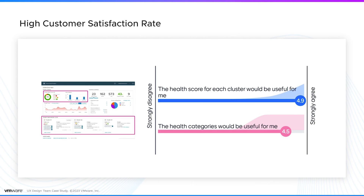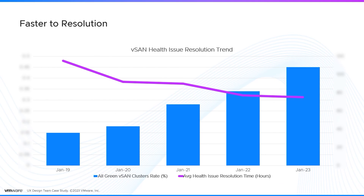Impact. When the dashboard was launched, it was quickly adopted by over 4,000 clusters. Customers gave it a 4.9 out of 5 rating, strongly agreeing that the cluster overview was useful for them. Data has shown that the average health issues resolution time has decreased, and the all-green cluster rate has increased.